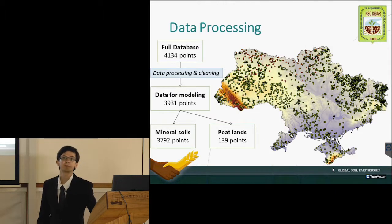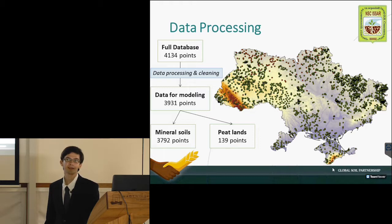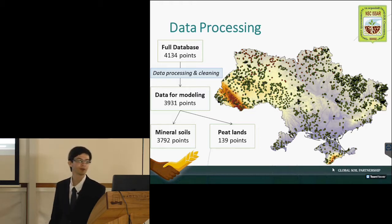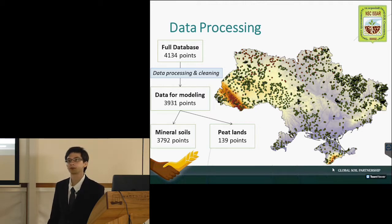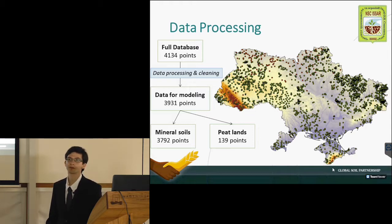The full database for processing includes more than 4,000 samples, and after processing and cleaning the data, the analysis showed that it was necessary to divide the dataset into mineral soils and peat soils for separate modeling. The reason was that the peat soils had information for the full depth of peat, while for mineral soils we stick to 0-30 cm.